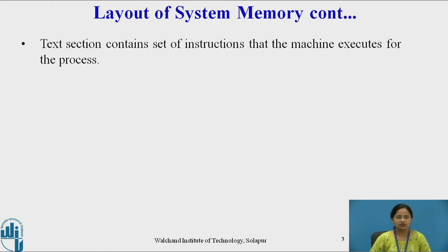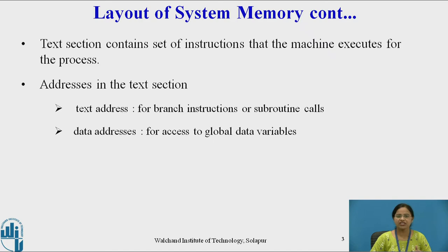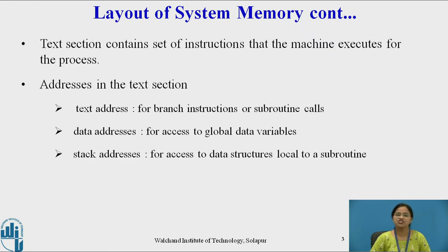The text section contains the set of instructions that the machine executes for the process. Text section contains some addresses. The addresses in the text section are text addresses, which contain addresses for branch instructions or subroutine calls. The data addresses contain addresses for access to global data variables if they exist in the program. And stack addresses contain addresses for access to data structures which are local to a subroutine.